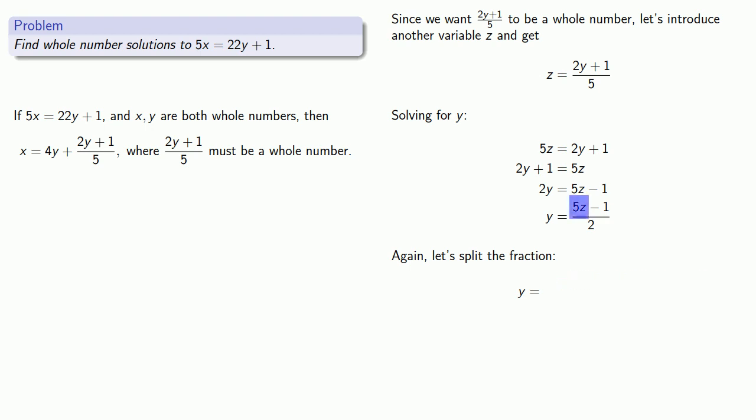So 5z, well, that's really 4z plus z, and the minus 1 we're stuck with. And we can split up our fraction and simplify. And that tells us that y is equal to 2z plus z minus 1 over 2, where if we want y to be a whole number, z minus 1 over 2 must be a whole number.